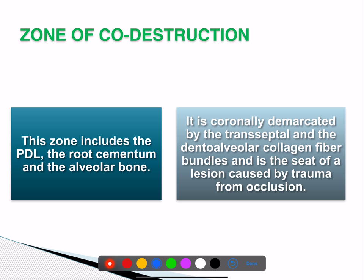The zone of co-destruction includes the PDL, root cementum, and alveolar bone. It is coronally demarcated by transseptal and dentogingival collagen fiber bundles and is the seat of the lesion caused by trauma from occlusion, as proposed by Glickman.